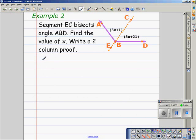In example two, we're told that segment EC, this segment here, bisects angle ABD. Find the value of X, write a two column proof.